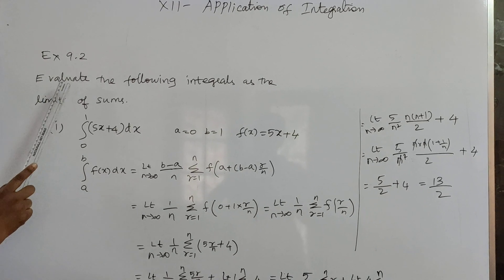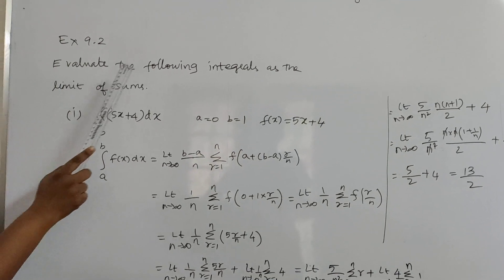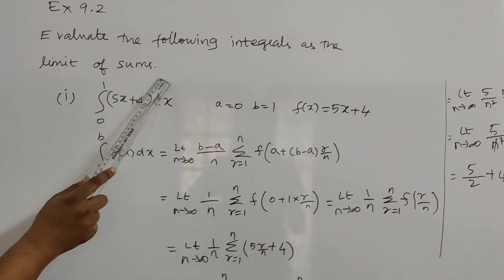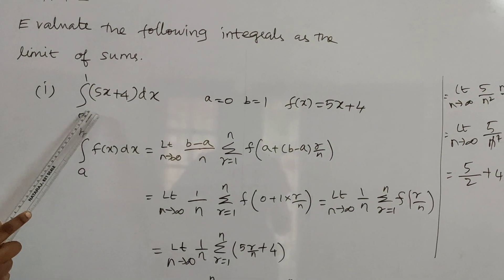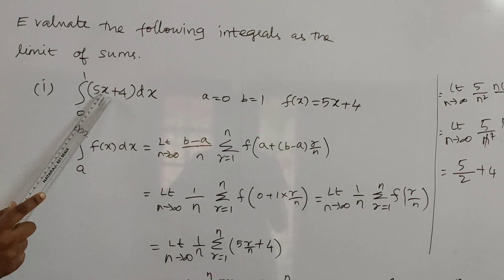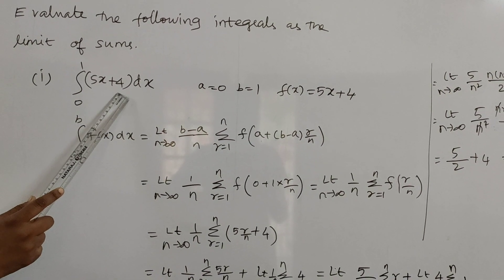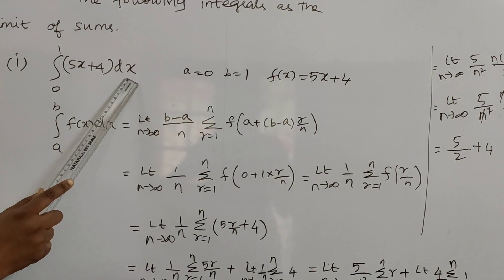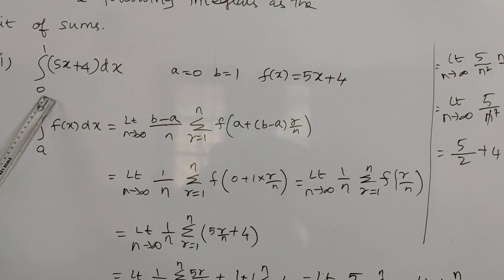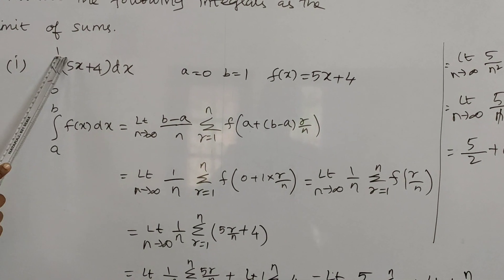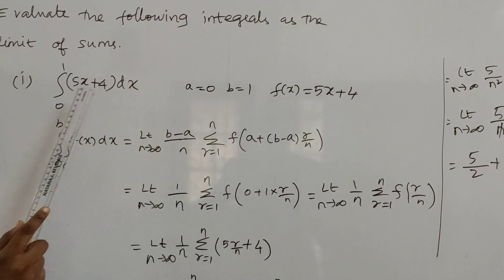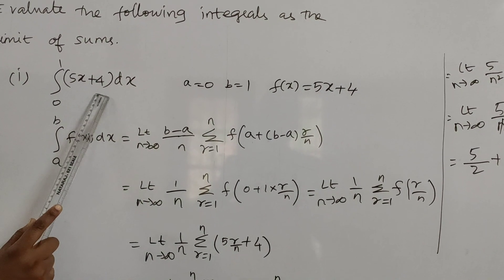Next exercise 9.2, evaluate the following integrals as the limit of sum. So integral 0 to 1, f of x = 5x plus 4, dx. Here a = 0, b = 1, f of x = 5x plus 4.